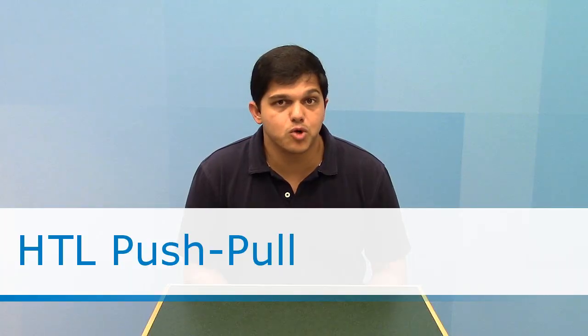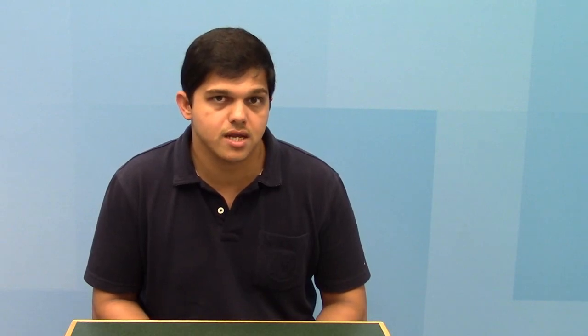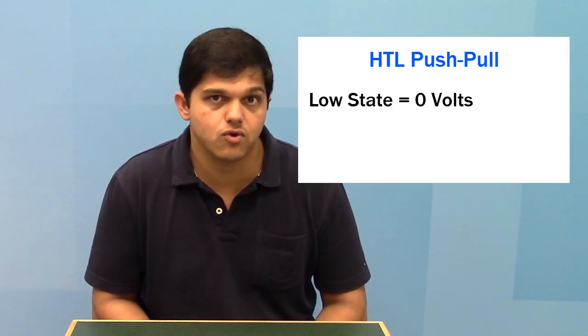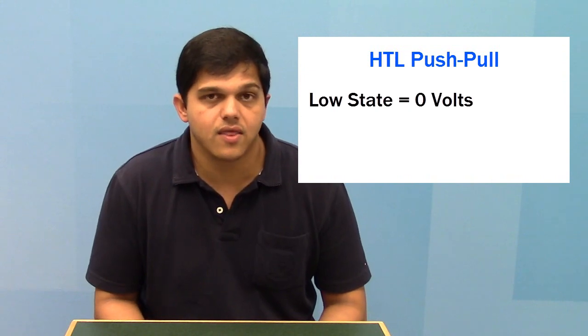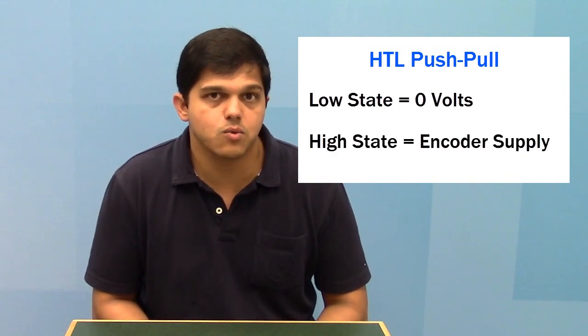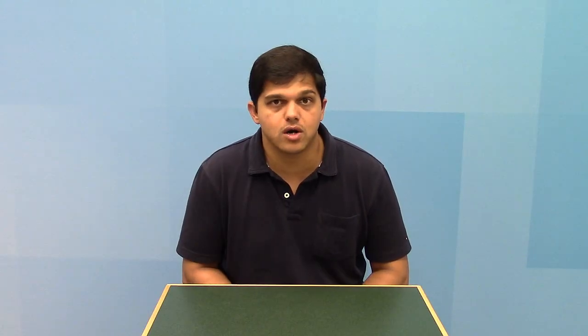HTL push pull can be a sinking or sourcing output, which basically means that for a low state you will get close to zero volts, or in a high state the output voltage will be the same as the input voltage. For example, for a 24 volt input you will get a 24 volt high output signal.